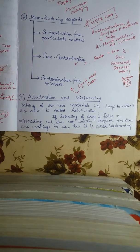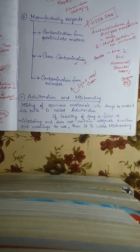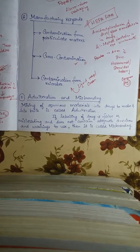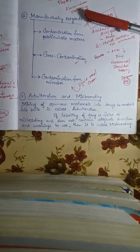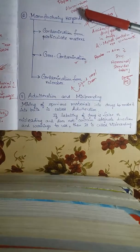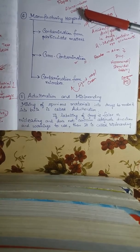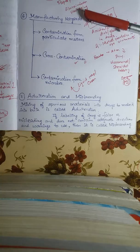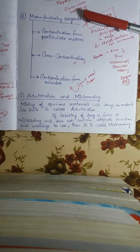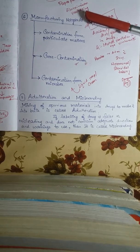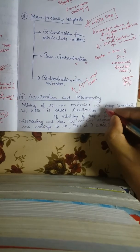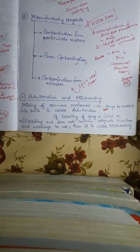Our next source is adulteration and misbranding. Adulteration is the mixing of foreign or spurious materials into drugs to bulk it up. For example, if you have 100 kg of a drug but mix only 90 kg of the actual drug with 10 kg of an impure salt, then you have adulterated it. This makes the drug impure.